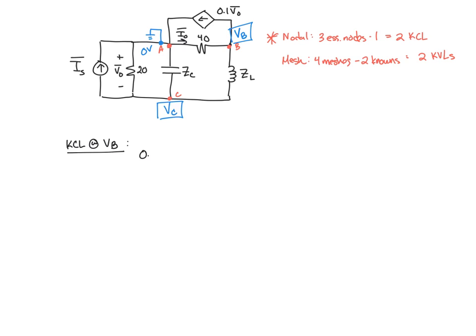I've got current 0.1 V0 exiting that node. I've got the current through the 40 ohm resistor, which can be defined as VB minus 0 over 40. I've got the current through my inductor as VB, and these should be labeled as VB bar because they are phasors. Let me go back and add those, just so we're consistent, but it's VB minus the neighbor, which is VC, over the impedance of that path, which is ZL, and that must equal 0.